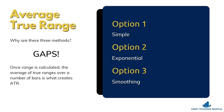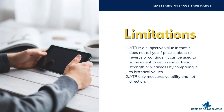ATR is a subjective value that does not tell you if price is about to reverse or continue moving forward. It can be used to some extent to get a reading on trend strength or weakness by comparing it to a historical value — you can look back into the past and see what ATR was during a specific period. It doesn't tell you if things are going to change, but it can be used to determine strength and weakness versus the past. Remember: ATR only measures volatility — it does not measure direction.